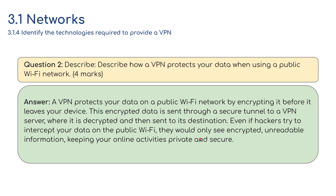Question two — describe: How does a VPN protect your data when using a public Wi-Fi network? Answer: A VPN protects your data by encrypting it before it leaves your device. The encrypted data is sent through a secure tunnel to a VPN server, where it is decrypted and sent to its destination. Even if a hacker intercepts your data on public Wi-Fi, they would only see encrypted, unreadable information — keeping your activities private and secure.